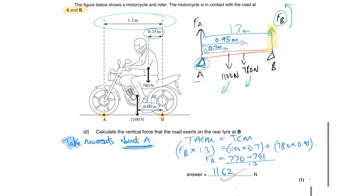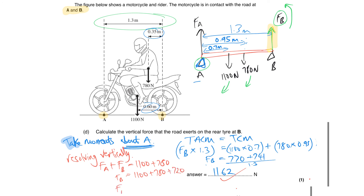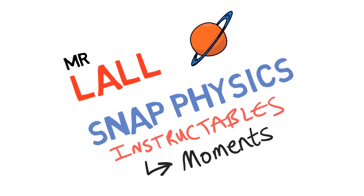There's also an easy alternative method — resolving vertically. If the system is in equilibrium, all forces upwards must equal all forces downwards. So FA + FB = 1100 + 780 = 1880 N. Since we already found FA = 720 N, FB = 1880 − 720 = 1160 N, giving pretty much the same answer. That's another way of doing the same question. Thank you very much for listening — stay tuned for moments part two.